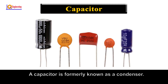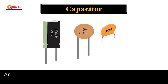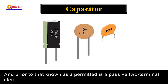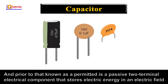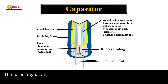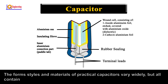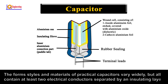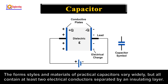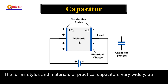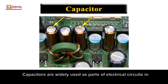A capacitor, formerly known as a condenser, is a passive two-terminal electrical component that stores electric energy in an electric field. The forms, styles, and materials of practical capacitors vary widely, but all contain at least two electrical conductors separated by an insulating layer. Capacitors are widely used as parts of electrical circuits in many common electrical devices.